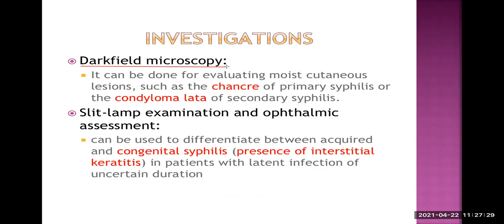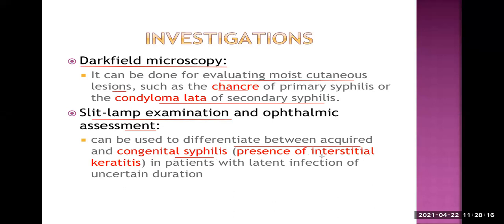Dark-field microscopy can be done for evaluating moist cutaneous lesions like the chancre of primary syphilis or condyloma lata of secondary syphilis — a swab is taken and examined under the microscope to see the motile organism. Slit lamp examination and ophthalmic assessment can differentiate between acquired and congenital syphilis. In congenital syphilis, there is presence of interstitial keratitis, which can be easily detected by slit lamp examination.